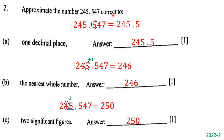The next question says: approximate 245.547 correct to one decimal place. The number in the tenths place is 5, so we circle 5 and underline the number to its right, which is 4. Since 4 is less than 5, we do not round up — everything stays the same. We keep 2, 4, 5, and 5, and drop the 4 and 7. The answer is 245.5.